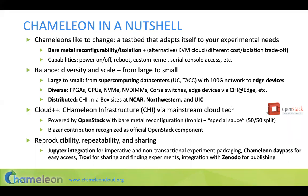For hardware, we try to balance diversity and scale. Chameleon started as two supercomputing centers — one at UC Chicago, one at TACC — connected with a 100-gigabit network, so you could experiment at scale and with large flows over that network. We expanded and now support experimentation with edge devices. We support all sorts of different generations of FPGAs, GPUs, NVMEs — consumer-grade and enterprise-grade — NVDIMMs, CORSA switches supporting software-defined experiments, and edge devices.